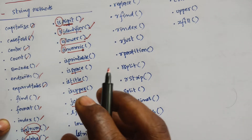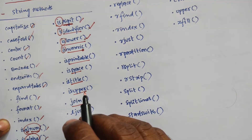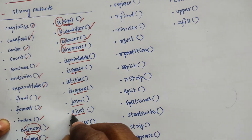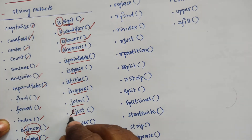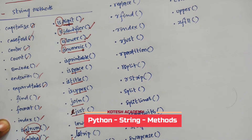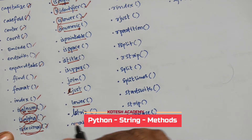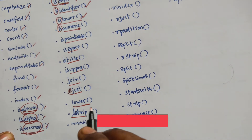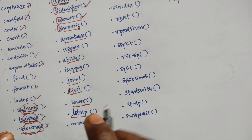Next is join, which joins the elements of an iterable to the end of the string. Next is ljust, which returns a left-justified version of the string — L for left, just for justified. Next is lower, which converts the string into lowercase — we discussed that in a previous topic. Next is lstrip, which returns a left-trimmed version of the string.